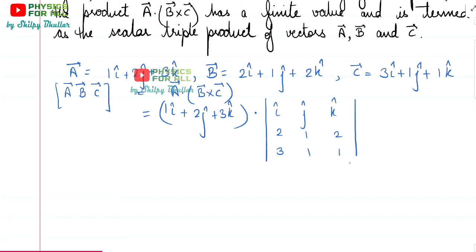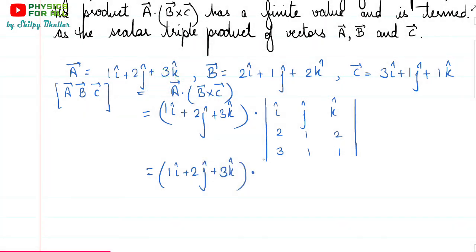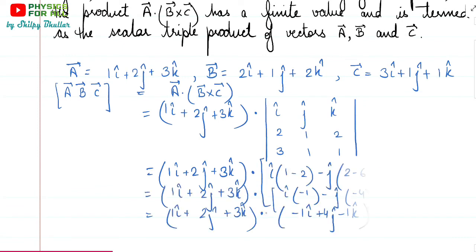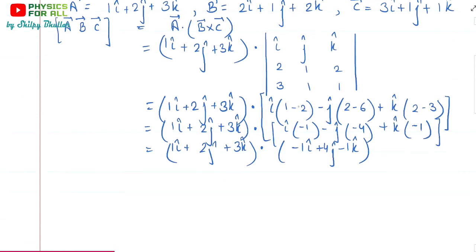Order matters in cross product — vector cross product is not commutative, so we cannot change the order of the vectors. The components of b come first, then c. Now let's solve the determinant. This is the result of the vector product of the two vectors, giving us a vector, and now we have to perform the scalar product of these two vectors.